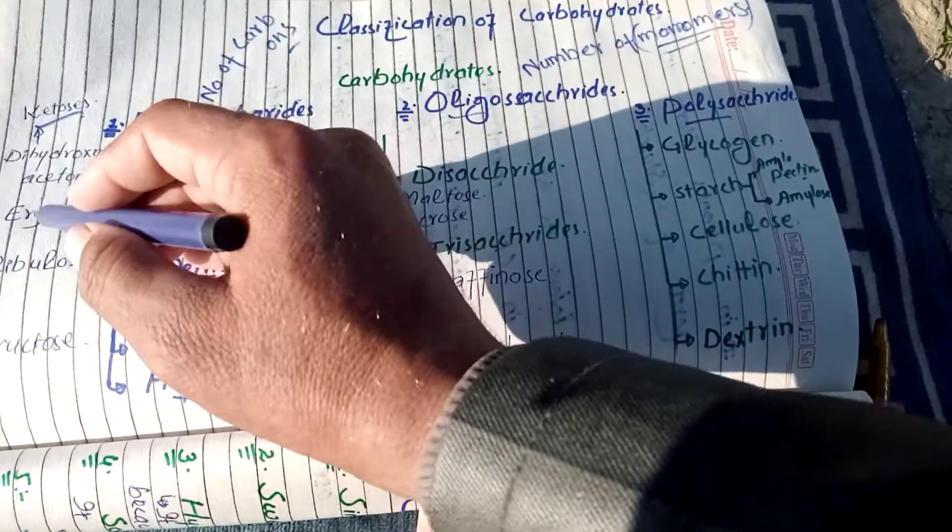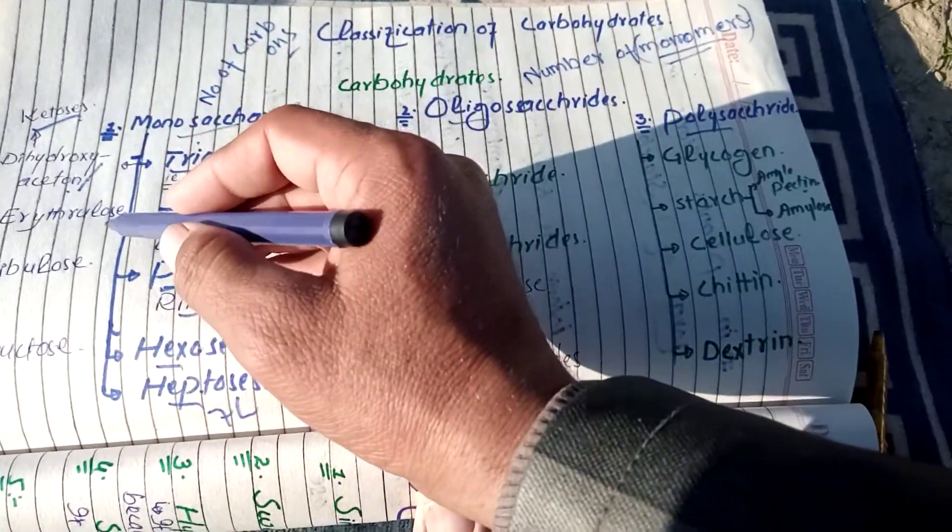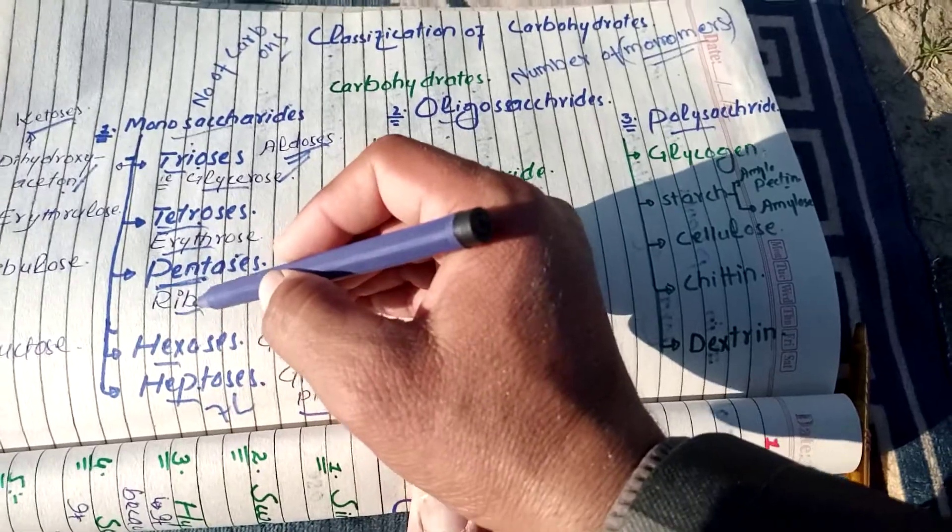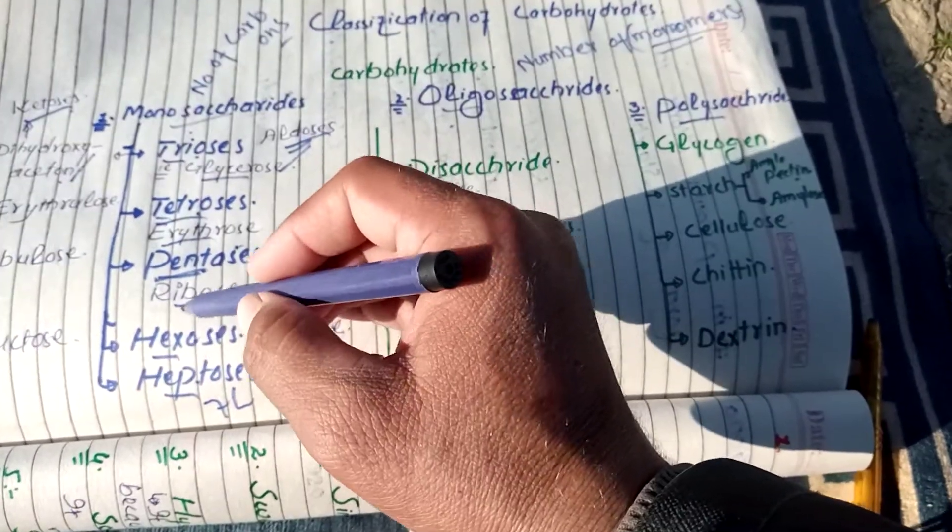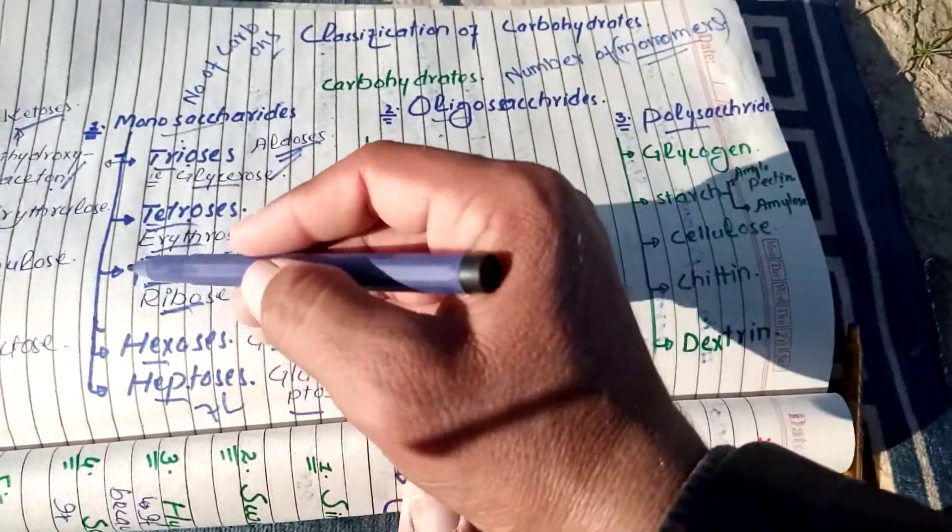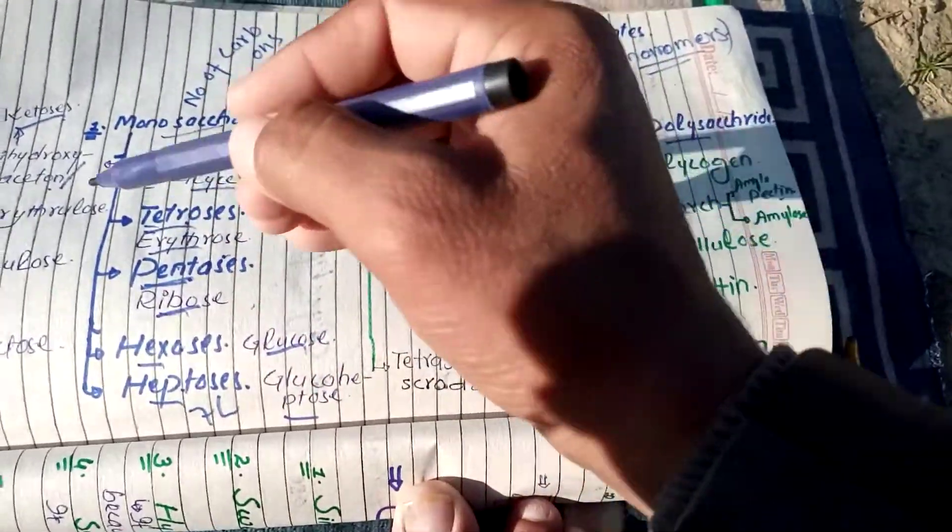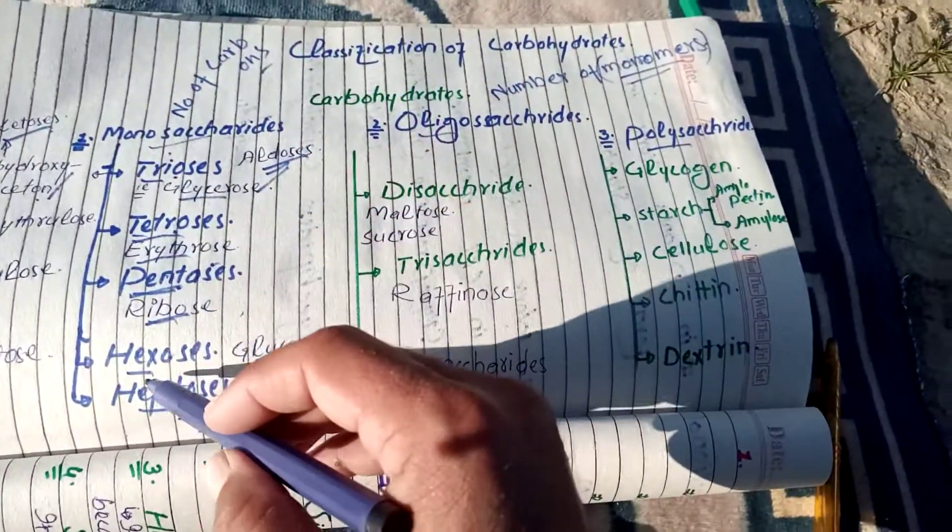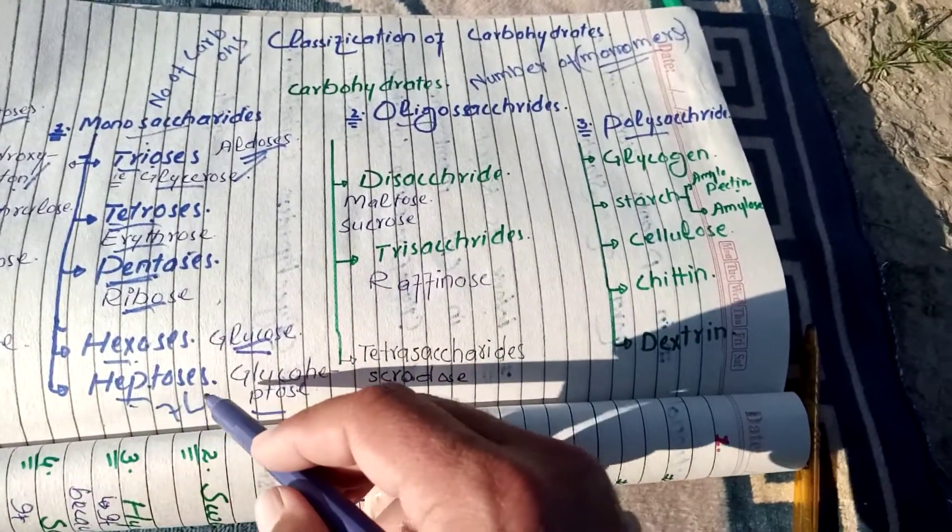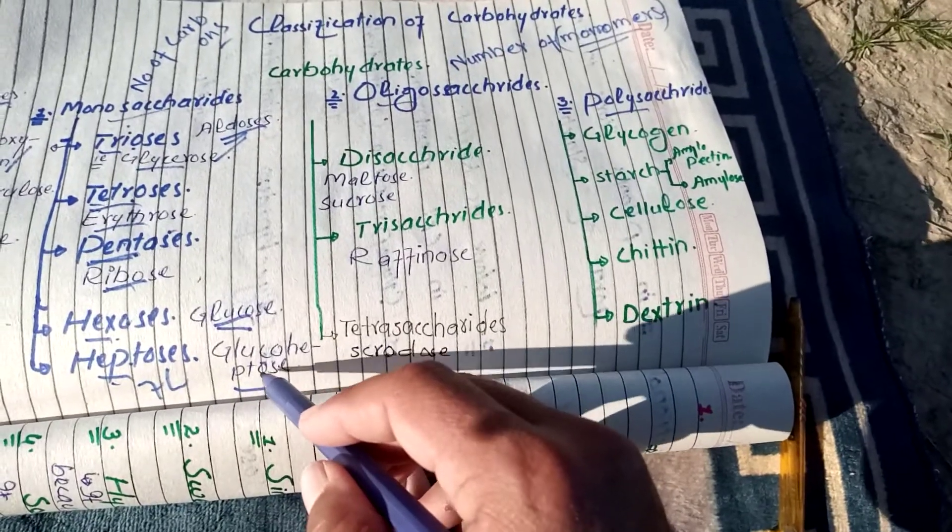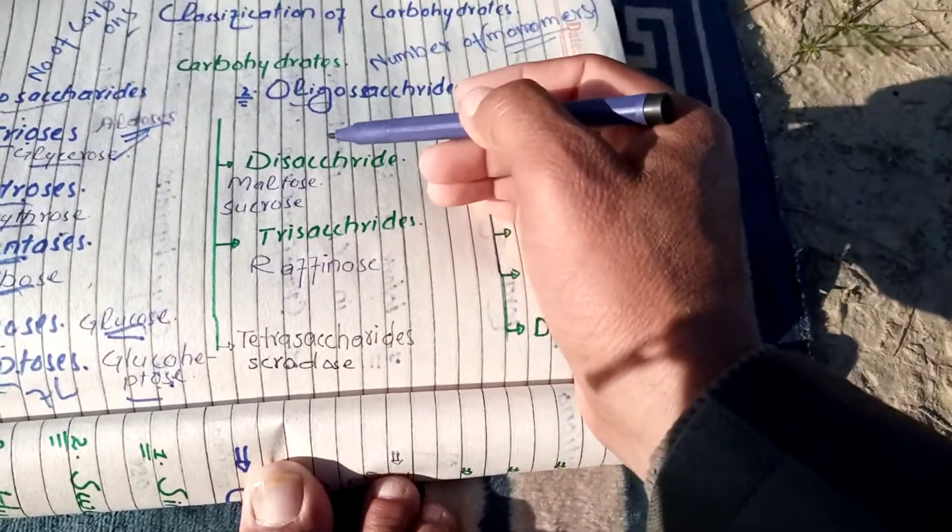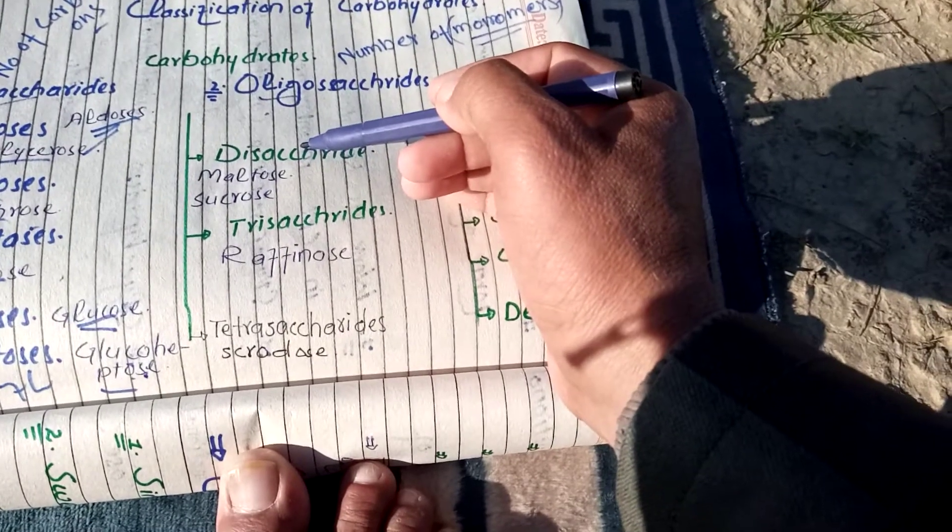Erythrulose is a ketone functional group. Pentose example ribose or ribulose. Hexose the example glucose and fructose. Heptose the example sedoheptulose.